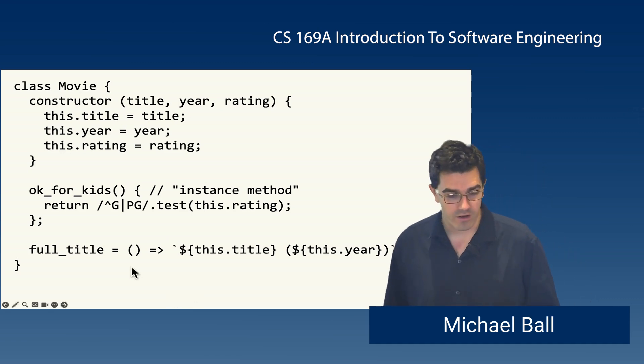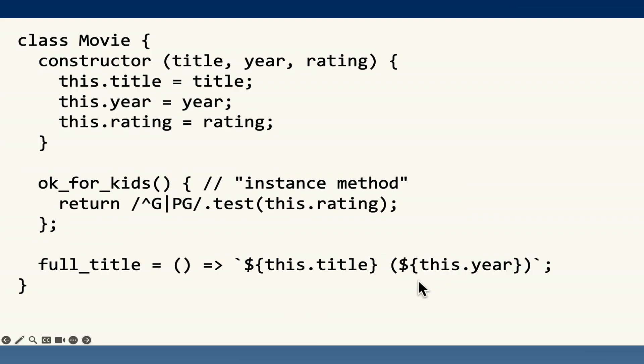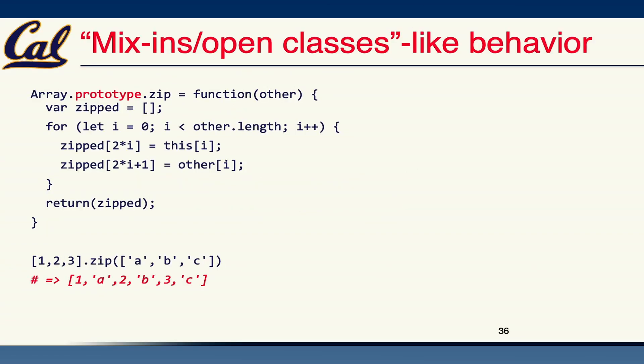Or we can use arrow functions. Set a name, arguments arrow, and then whatever the return value is if there's no curly braces. This example here just uses string interpolation, just showing the title and year in the same string. This is how classes work in JavaScript. If we want to extend built-in classes, you'll see this a lot in certain libraries. Similar to how Rails extends native Ruby objects, you can extend native JavaScript objects by expanding their prototype.